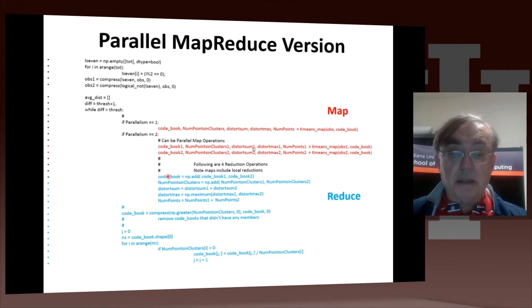Then we take the center and in the case of parallelism 1, we come back and do some arithmetic here. But for the case of parallelism 2, we still need to do a little bit of work. We add the two code books together, we add the number of points in the clusters together, we add the distortions together, we take the max over the maximum in process 1 or process 2, and then we add the total number of points together.